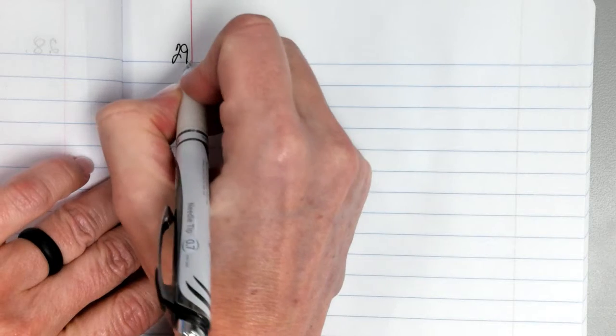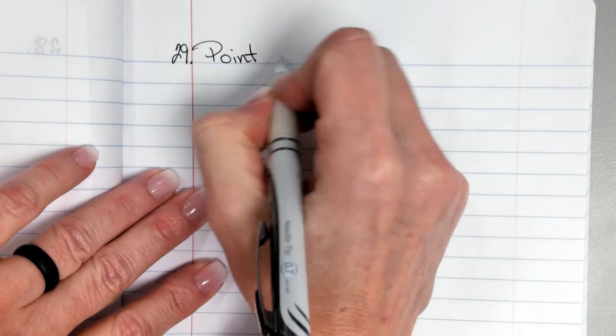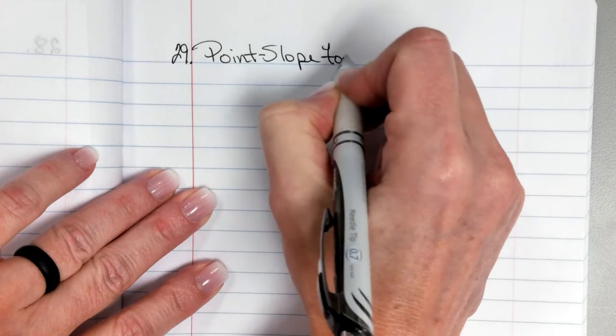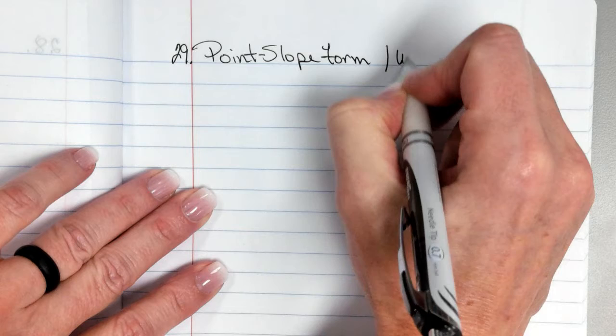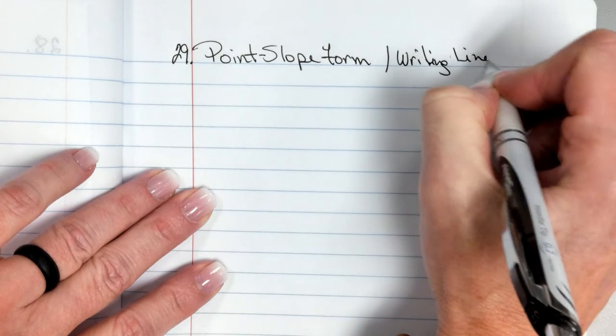It's up to you if you want. If you've got something blue there, I don't think it'd be too easy to write on. All right, so 29, point-slope form and writing linear equations.